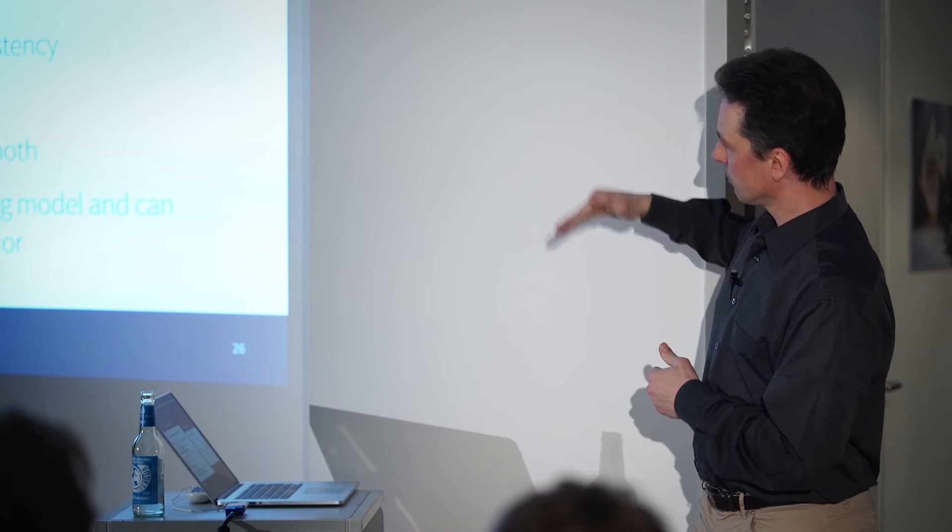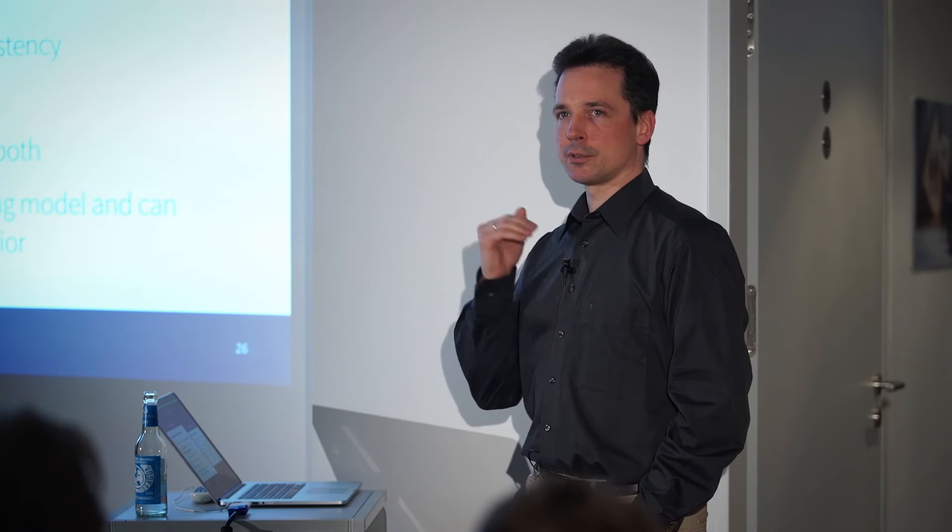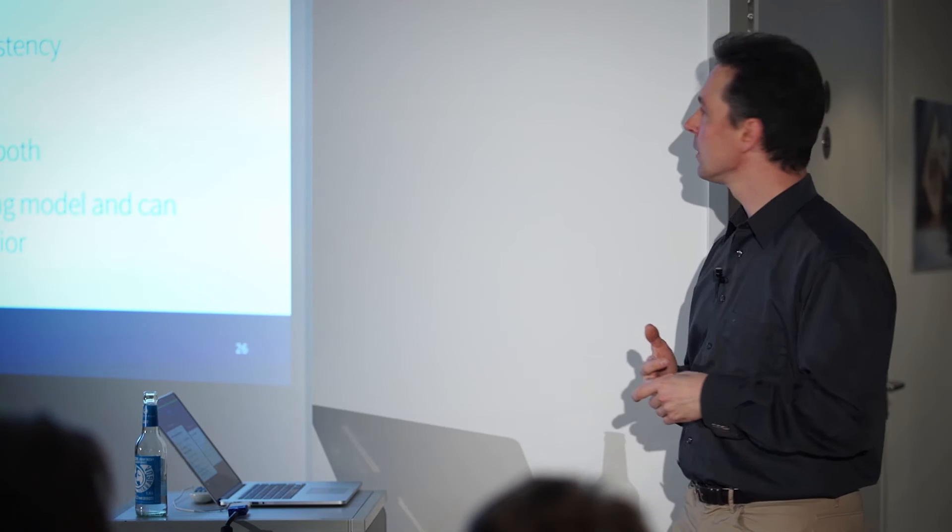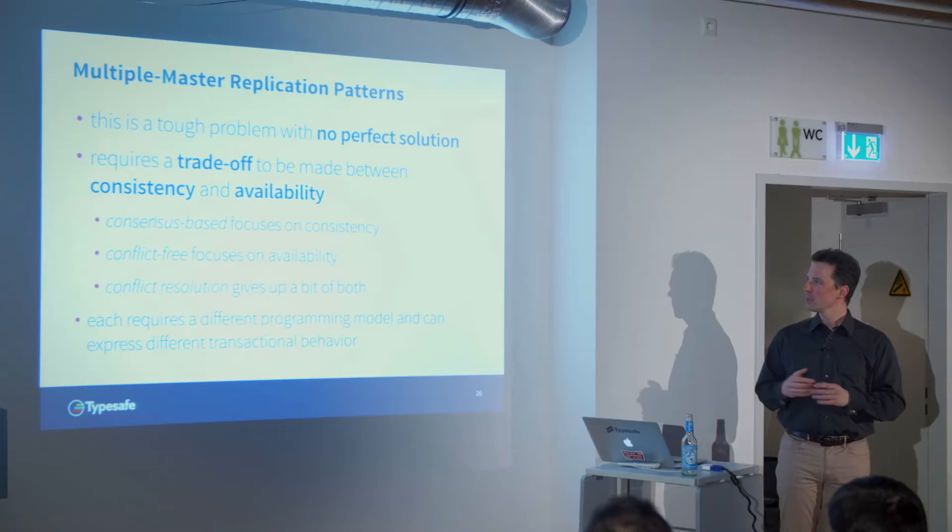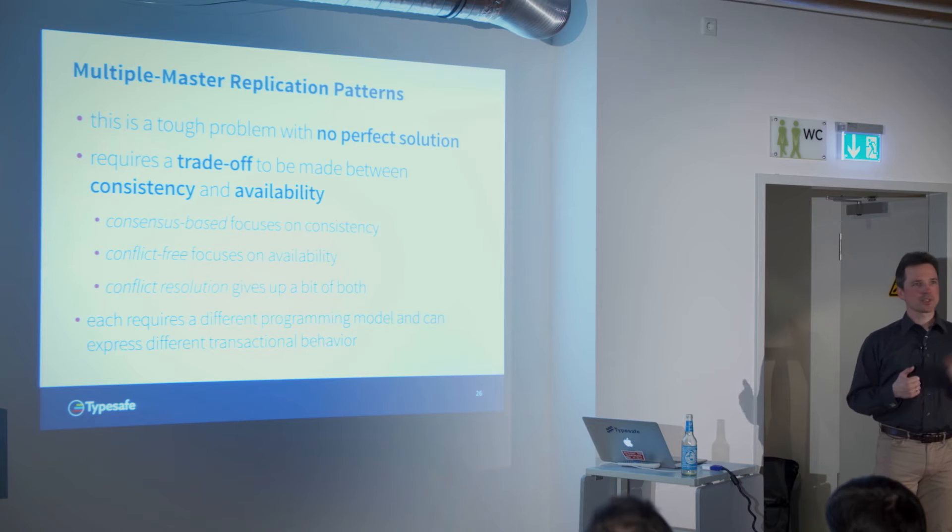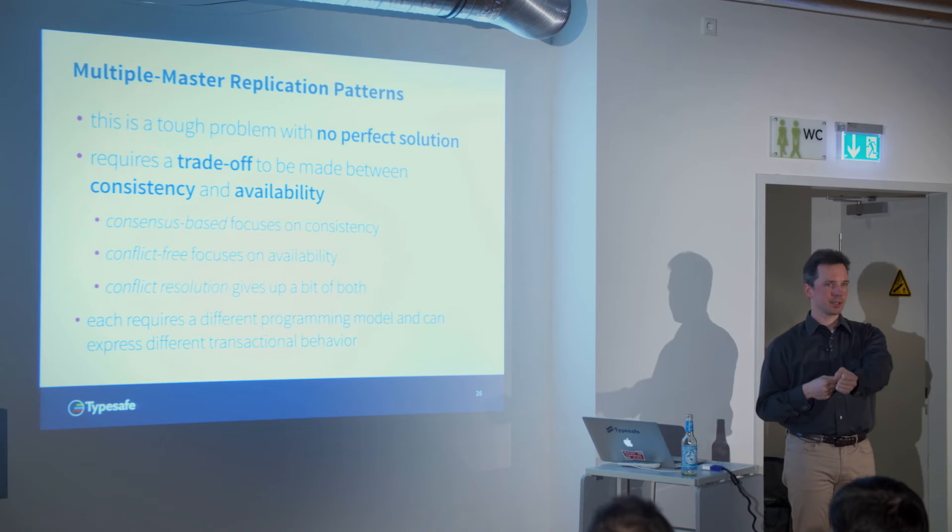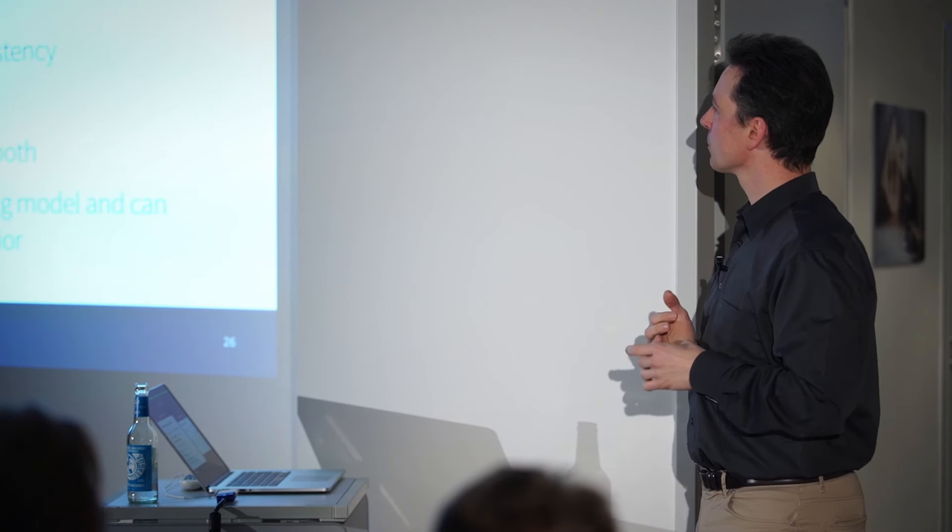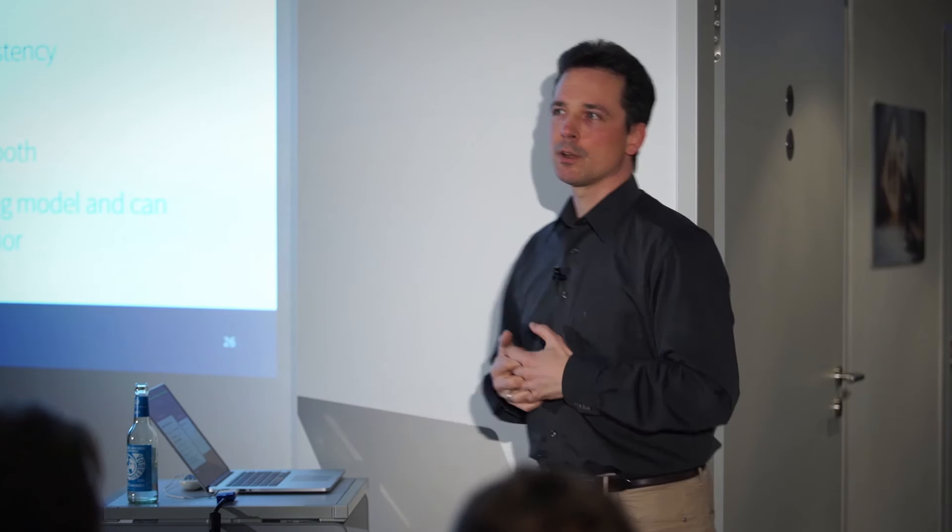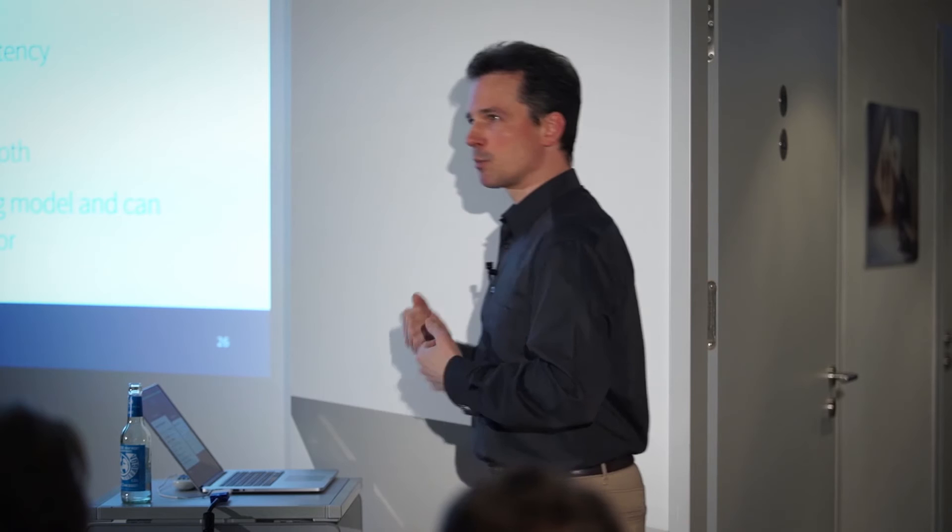I categorize different solutions in these three boxes. First is consensus-based. That focuses on consistency. It tries to implement full consistency to make the system easy to reason about. I'll go into details. Then we have conflict-free, which is at the opposite side of the spectrum. It focuses on availability. You need to be able to always make changes to the system. The system can never say, I cannot currently accept this update. This has very interesting implications. And then, in the middle, we have conflict resolution, which is neither perfectly consistent nor perfectly available. But it's what most systems do.